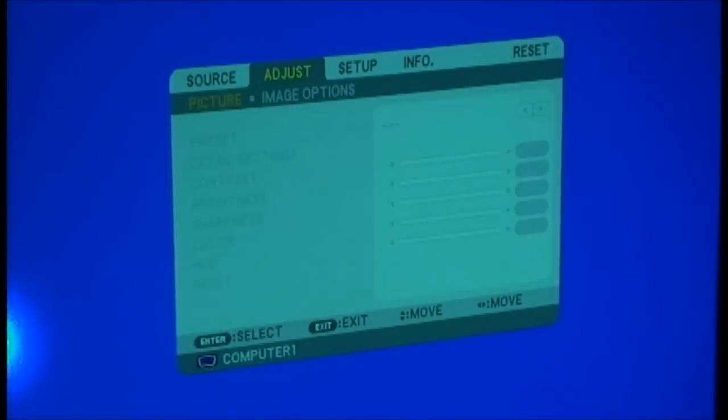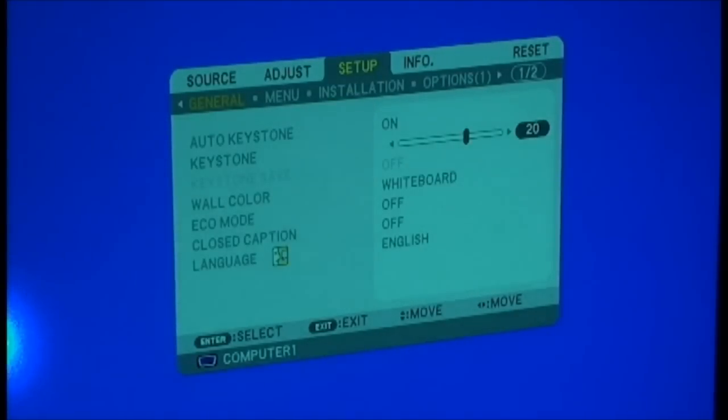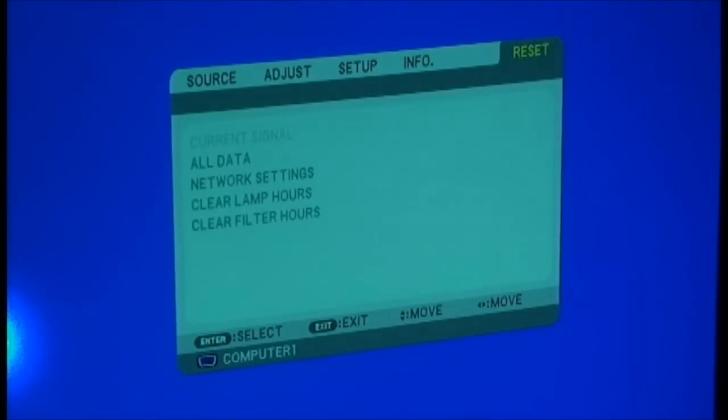Hit the menu button. Using the direction arrows, move right until reset is highlighted. Now use the down arrow until clear lamp hours is highlighted and hit enter.